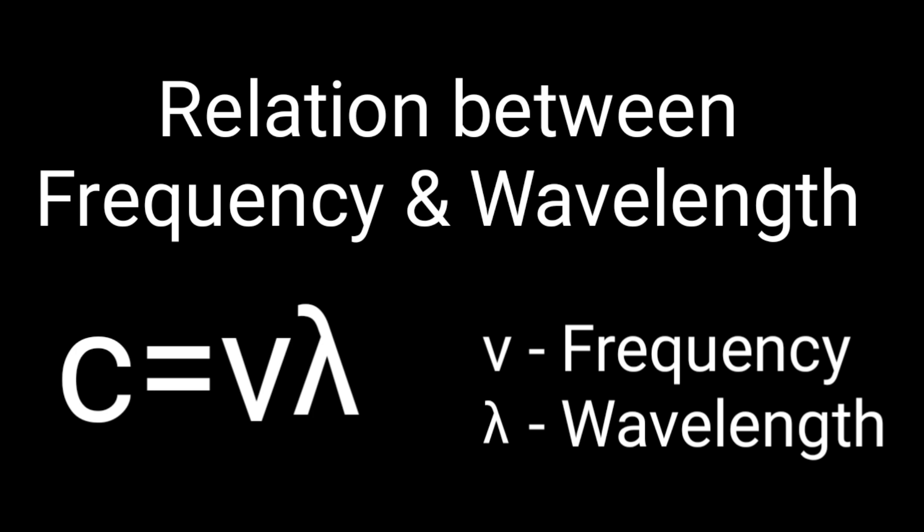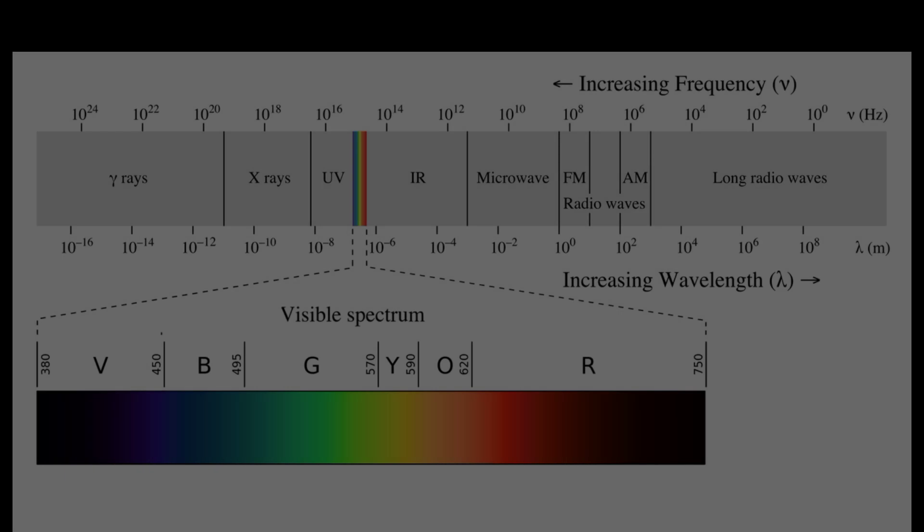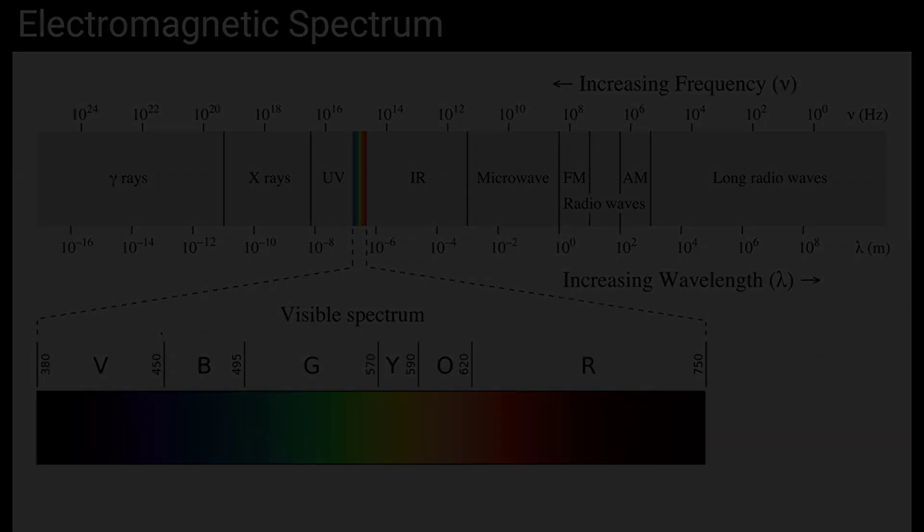As the frequency increases, the wavelength becomes smaller. Electromagnetic waves can have a wide variety of frequencies and wavelengths. The entire range of electromagnetic wave frequencies is known as the electromagnetic spectrum.